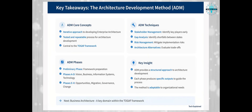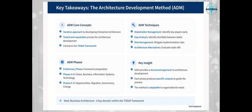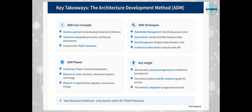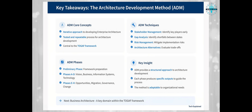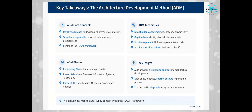Let's recap what we've learned about the ADM. The Architecture Development Method is the core of TOGAF — a tested and repeatable process for developing architectures. It's iterative, not linear, meaning it's a continuous cycle of architecture definition and realization. The ADM includes a Preliminary Phase, ongoing Requirements Management, and Phases A through H, each with specific purposes and outputs. Phase A defines the Architecture Vision. Phases B through D develop the target architecture across business, information systems, and technology domains. Phases E through H focus on implementation and governance.